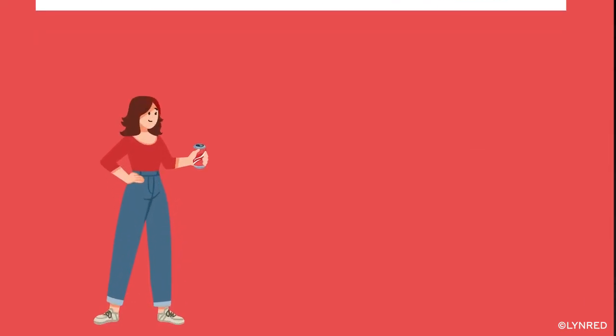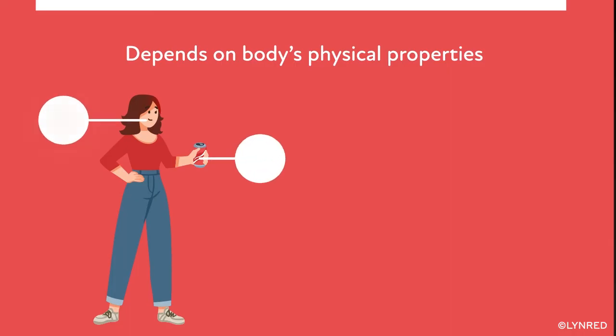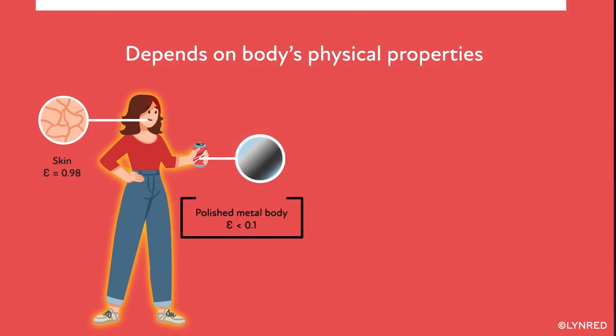A body's emissivity depends on its physical properties. For example, skin has an emissivity of 0.98, whereas polished metal bodies, like aluminum, have emissivity values that may be less than 0.1. These are infrared mirrors.